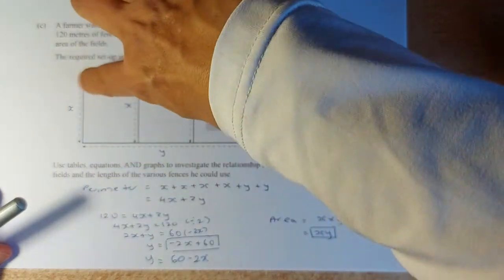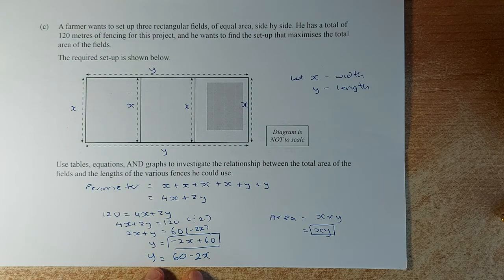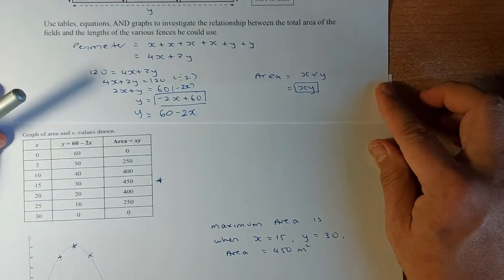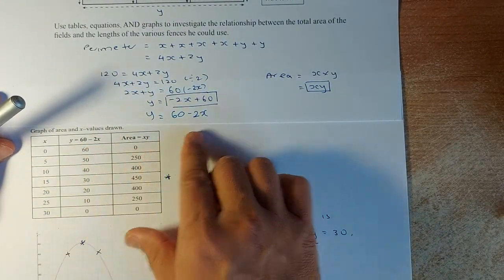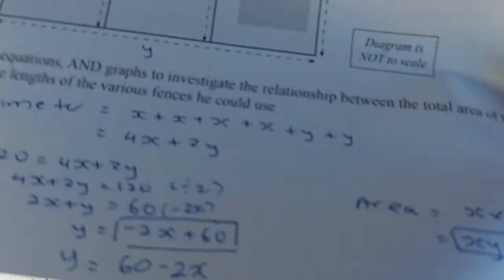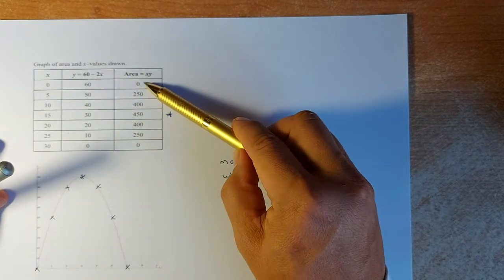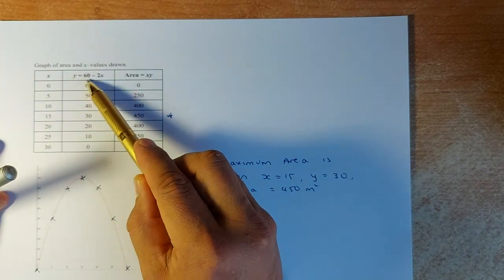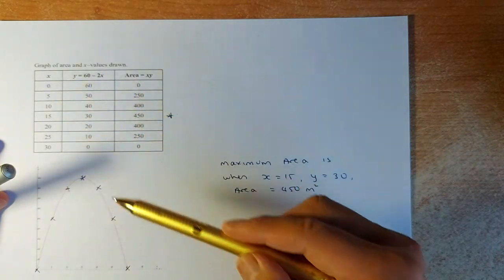The area is length times width, so it's xy. We use the y formula and the area formula to draw a table. So we draw a table with x, y equals 60 minus 2x, and area equals xy. We substitute values. When x is 0, y is 60 and area is 0. When x is 5, y is 60 minus 10 which is 50, and area is 50 times 5 equals 250. We do the same for all numbers from 0 to 30.